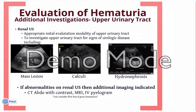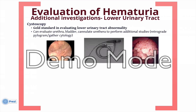The lower urinary tract also requires evaluation. Unfortunately, radiographic investigations cannot rule out significant intravesical pathology. Because of this, patients requiring evaluation for hematuria need to have a cystoscopy. Cystoscopy is the gold standard for ruling out any significant lower urinary tract abnormality. With cystoscopy, we can evaluate the entire urethra as well as the bladder, and in some instances we can cannulate the ureteral orifice for the purpose of performing a retrograde pyelogram or even selective cytologies from the upper urinary tract.